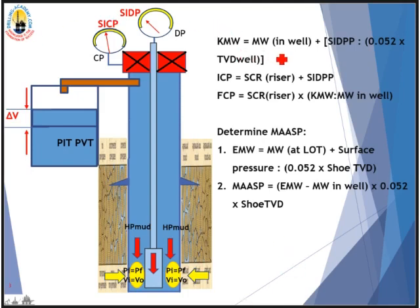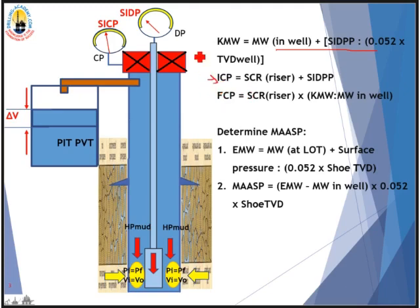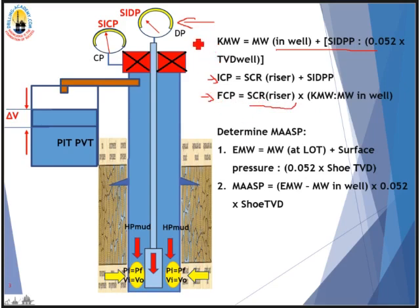The kill mud weight is calculated by the standard formula. ICP equals the SCR slow circulating pump rate plus shut-in drillpipe pressure. If you forgot to take SCR, the ICP will be whatever registers on the drillpipe pressure gauge after you have reached kill rate in the first circulation. FCP is also calculated from the SCR. If you don't have SCR, FCP is whatever is shown on the drillpipe pressure gauge after your kill mud has reached the bit. You also need to work out your MAASP using the relevant formulas.